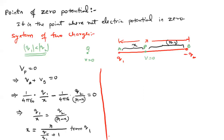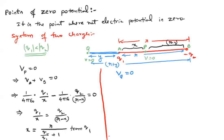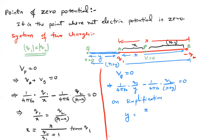There is another point Q which lies outside the two charges. Suppose that point is located at a distance y from q1, so it is at a distance r plus y from q2. The zero potential point is always closer to the smaller magnitude charge. Setting net electric potential at Q equal to zero: (1/4πε₀)(q1/y) minus (1/4πε₀)(q2/(r+y)) = 0. On simplification, y = r / (q2/q1 − 1).